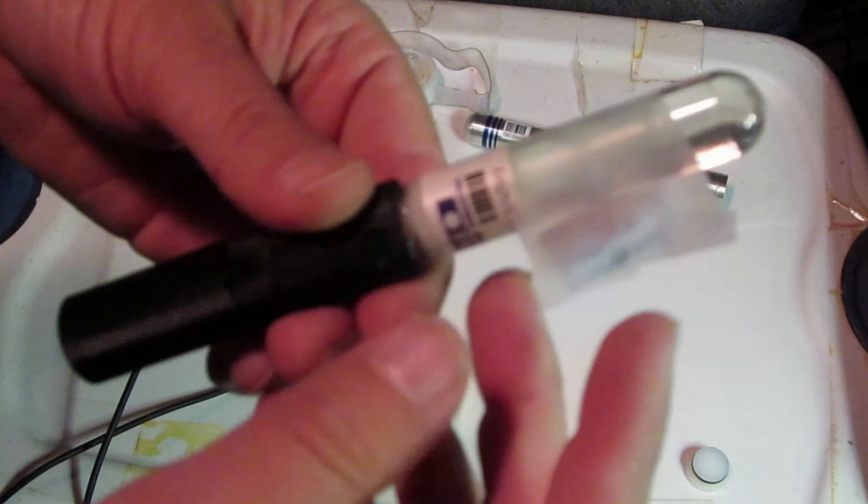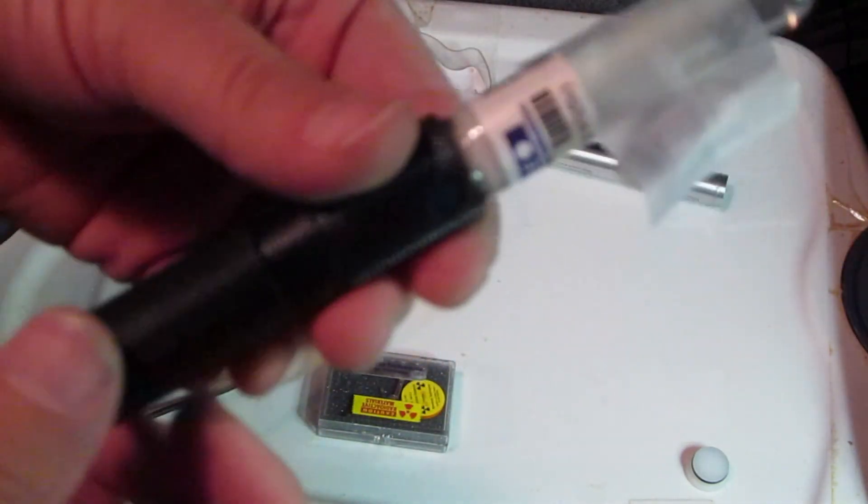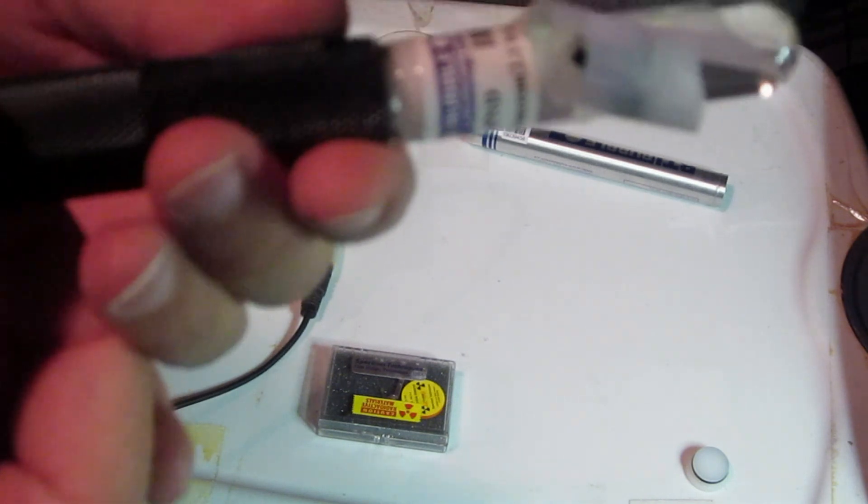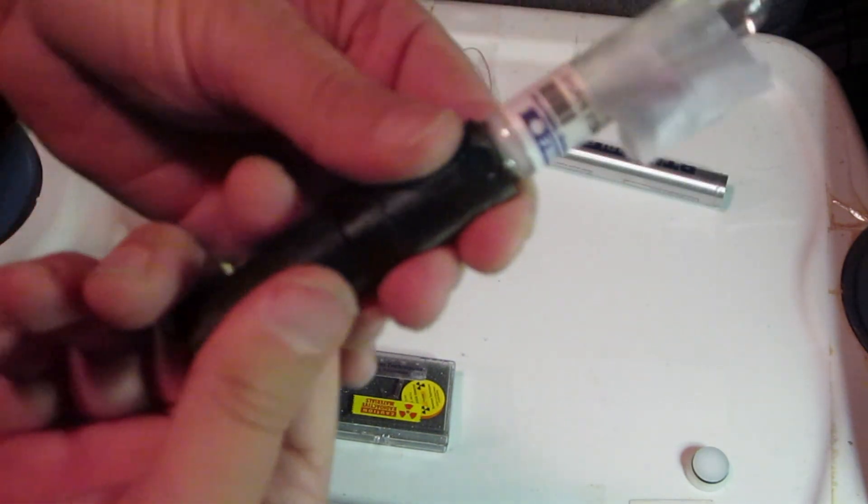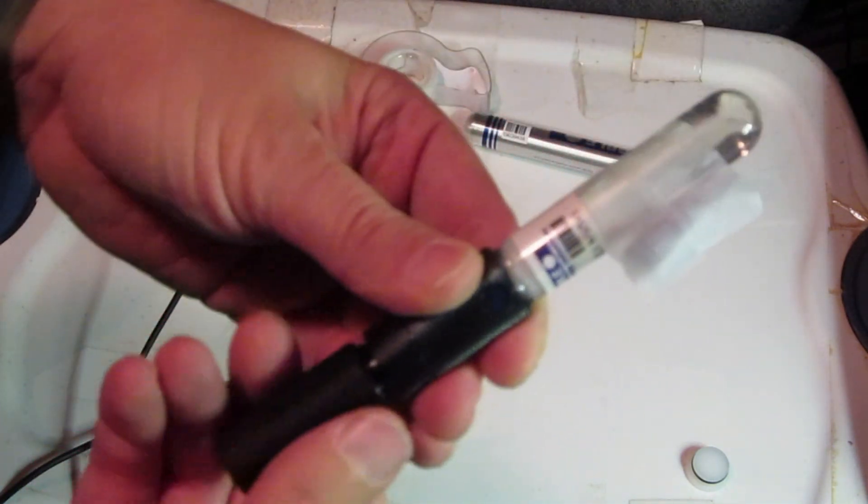So, we have our neutron generator, put right next to our neutron detector, and this is a fast neutron detector, and I'm going to activate it by taking out this plunger down here.